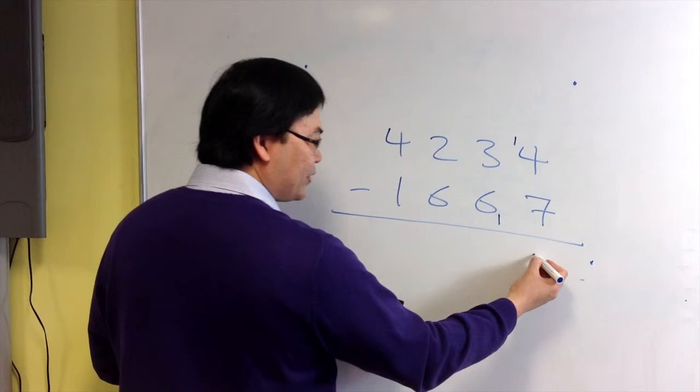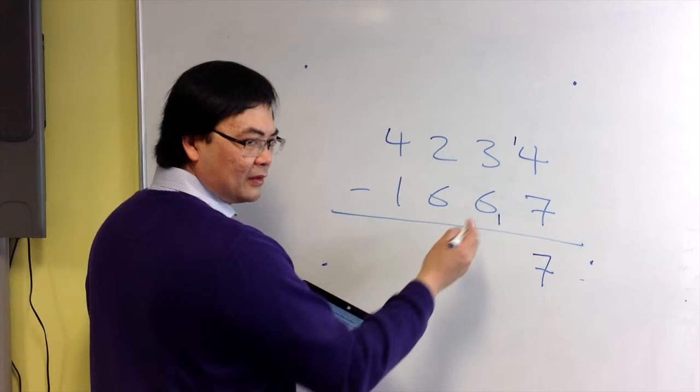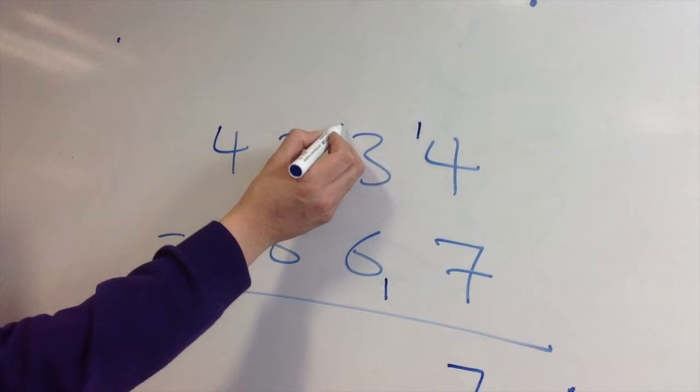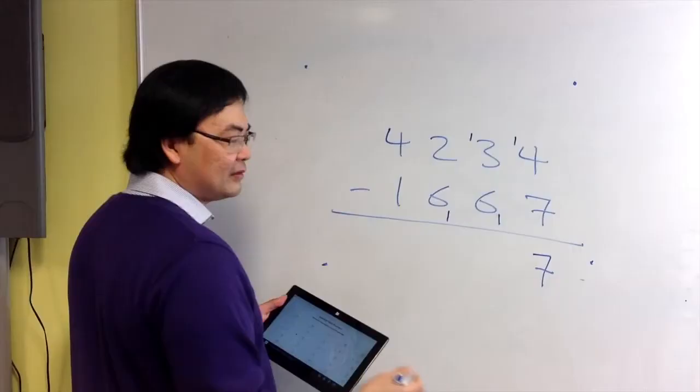It's important to realize that this is now 6 plus 1, which is 7. So 3 take away 7 you can't do. You repeat the process. You borrow 1, you pay back. 13 take away 7 now is 6.